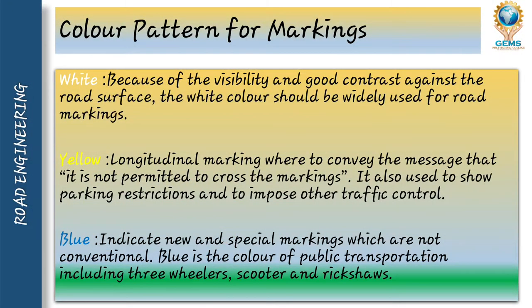Next is the color pattern of marking. White color: because of its visibility and good contrast against the road surface, white color is widely used for road marking. The center line and shoulder markings are done in white color. Yellow marking is used for longitudinal marking where it conveys the message that it is not permitted to cross this marking. It is also used to show parking restrictions and to impose other traffic controls.